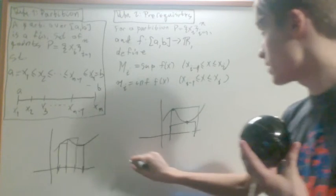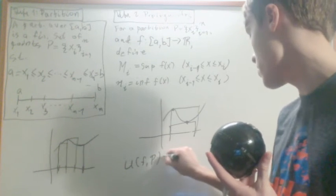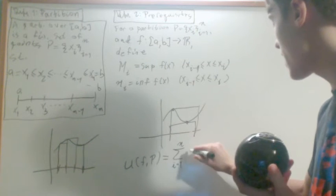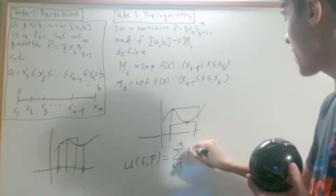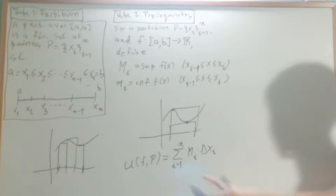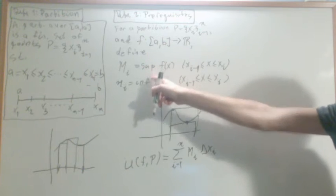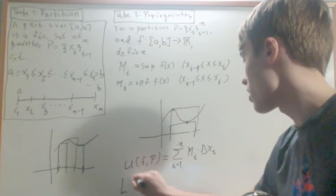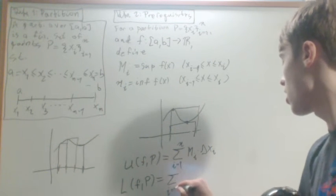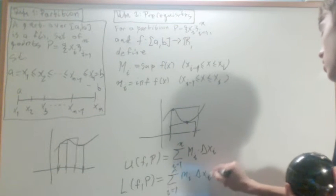And so, what we also define is the sum of the areas. So we say that u of f, p is going to be the area of all the rectangles, so it's going to be the sum from i equals 1 to n of mi times delta xi. Makes sense, because this means upper. This is the upper rectangle. And then we're going to have lower, l f, p, is going to be the area of all the lower rectangles added up, like that.